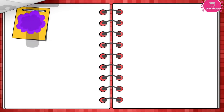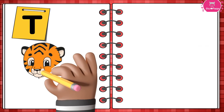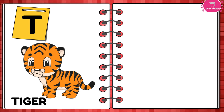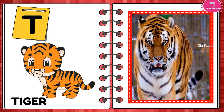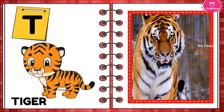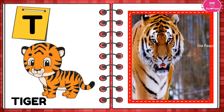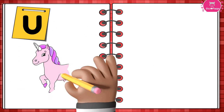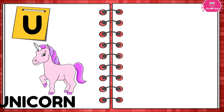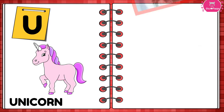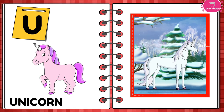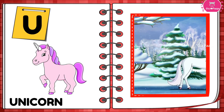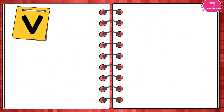T is for Tiger. Tiger. T is for Tiger. Tiger. U is for Unicorn. Unicorn.